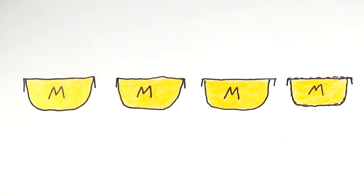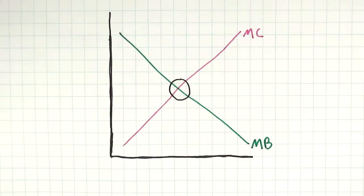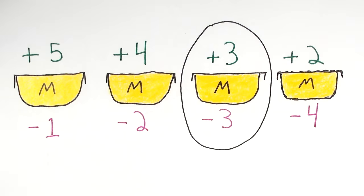For reasons that belong in their own video, the marginal benefit tends to decrease as you go on, and the marginal cost tends to increase. If you graph the two together, you see there will eventually come a point when the marginal cost equals the marginal benefit. This is the point that economists are interested in.